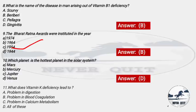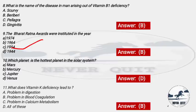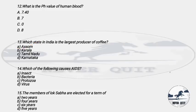Question 11: What does Vitamin K deficiency lead to? Options: A) Problem in digestion, B) Problem in blood coagulation, C) Problem in calcium metabolism, D) All of these. The right answer is option B — Vitamin K is related to blood clotting. If you have a Vitamin K deficiency, you will have problems with blood coagulation.